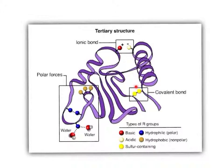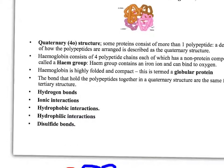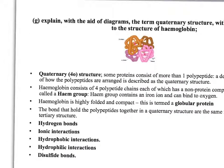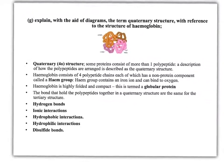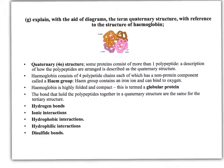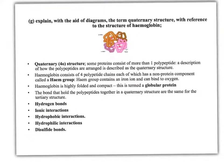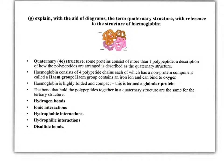So we've looked at primary structure — the sequence of amino acids; secondary structure — how those sequences fold up to form alpha helixes and beta pleated sheets; and tertiary structure — how those secondary structures fold in on each other and bind through various chemical bonds and interactions to form a three-dimensional structure.